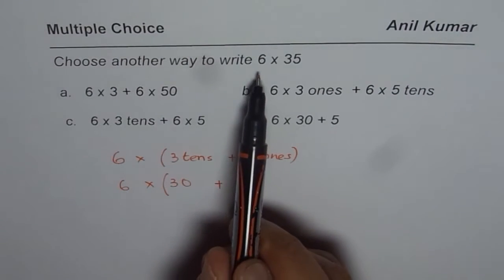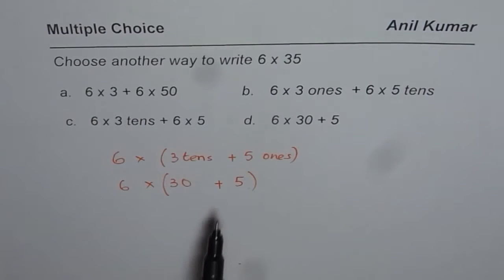That's how you should understand 6 × 35, and it will help you make the right choice. You can still pause the video, select the right answer, and then look at my suggestion.